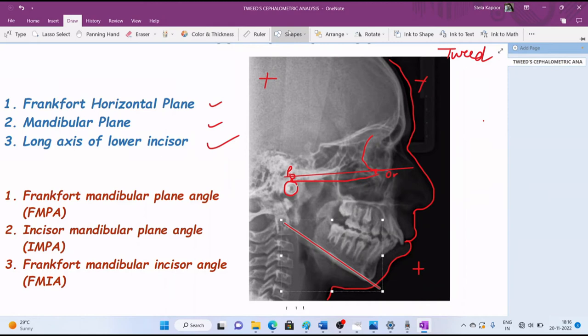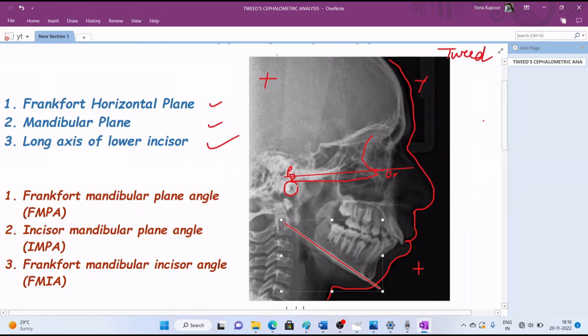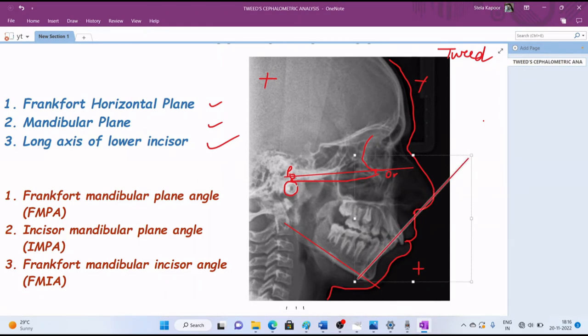Now for the long axis of the lower incisor, it is very easy. We need to draw the lower incisor. You can visualize this is the most proclined incisor I am taking. This is my long axis of the lower incisors, and the incisor I considered is this one, the most proclined lower incisor.